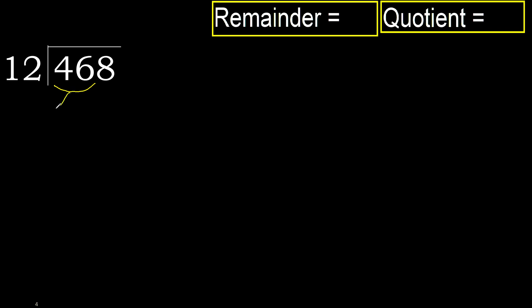46 is not less than 12, so we work with 46. 12 multiplied by which number is nearest to 46 but not greater? 12 multiplied by 5 is 60 — greater. Multiplied by 4 is 48 — greater. Multiplied by 3 is 36 — not greater.